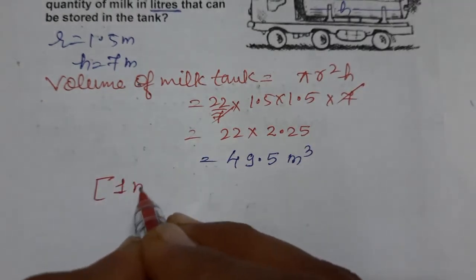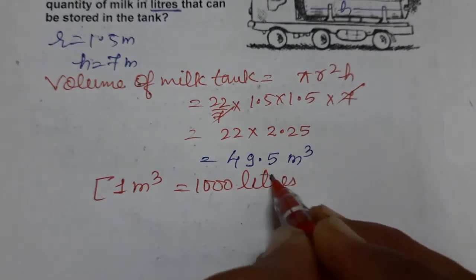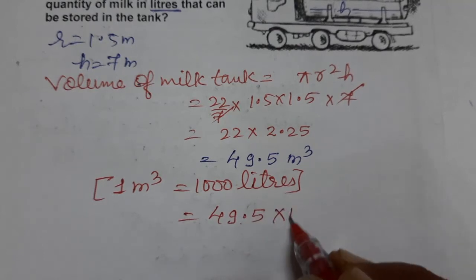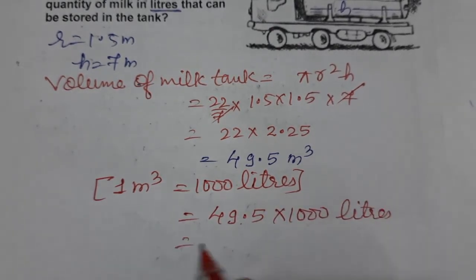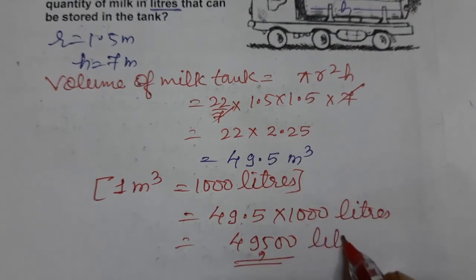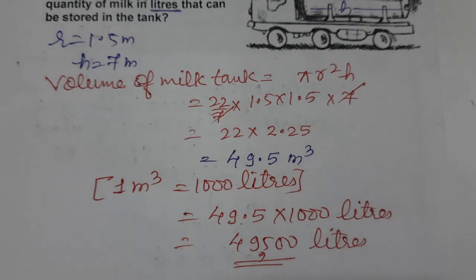We know 1 meter cube equals 1000 liters. So multiply 49.5 by 1000, which gives 49,500 liters. So the milk tank can store 49,500 liters of milk — nearly 50,000 liters. This is the capacity of the milk tank. I hope you understood. Thank you so much for watching.